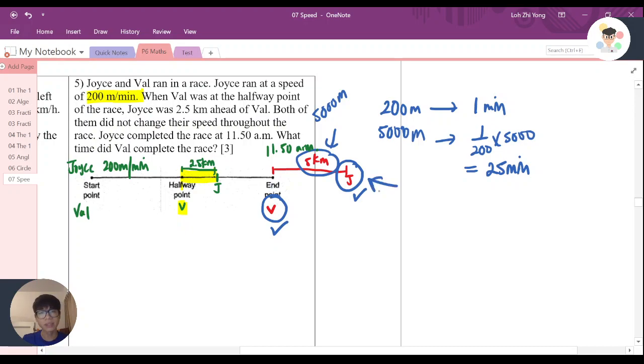So I need to find what time it will be here. Now, I know that Joyce reached the race at 11:50, and I know up to here is 25 minutes. I need to add these together. I know the time it reached here is actually the time Valerie reached the endpoint.